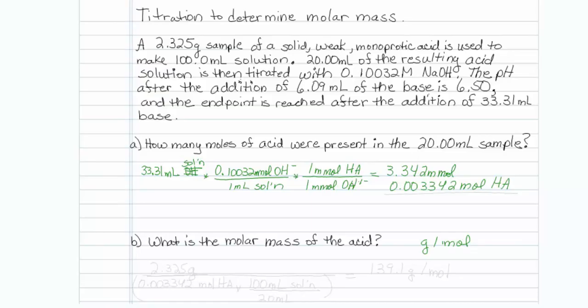So grams we have. We have 2.325 grams of material, but acid is a different matter. We know we have 0.003342 moles of acid, but that wasn't in the whole sample. That was in just 20 mils. So I really need to ratio this.